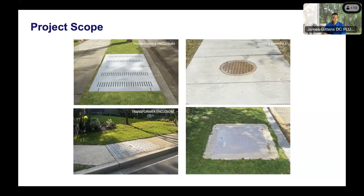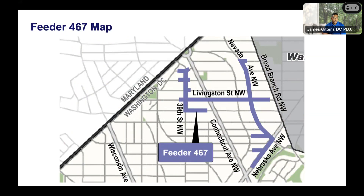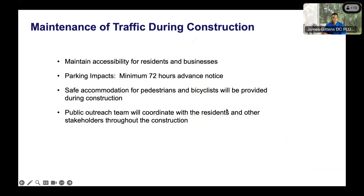The project area for Feeder 467 is primarily residential. Nebraska Avenue, while residential, is a bit more of a thoroughfare, and the project does cross Connecticut Avenue. We recognize the challenges: these are narrow streets with a lot of cars parked along the sides.